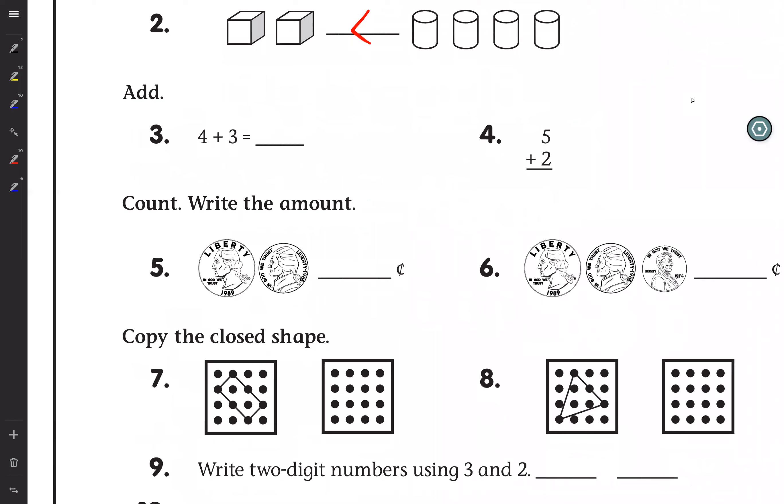Number 3: 4 plus 3 equals 7. Exactly. Number 4 is 2 plus 5, also equals 7.